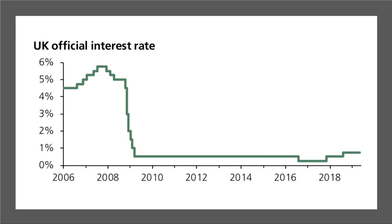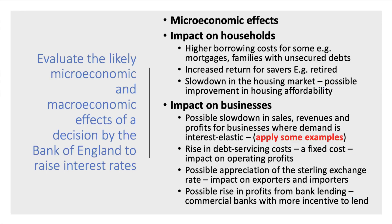A synoptic question, if monetary policy comes up, might ask you to think about both the micro and macro effects of a change in monetary policy. An essay question would require you to use both micro and macro. Remember the synoptic aspect — if you only focus on macroeconomics, for example, you'll only have access to around half the available marks. So here's the question: evaluate the likely micro and macroeconomic effects of a decision by the Bank of England to raise interest rates.